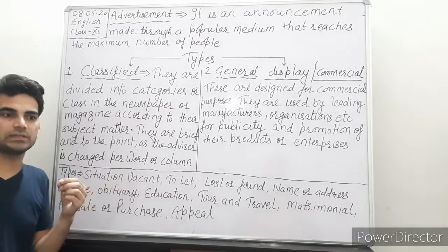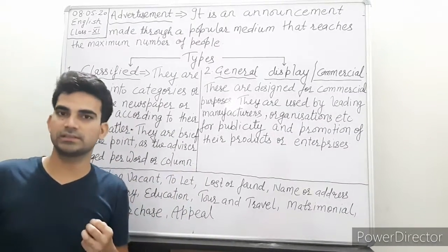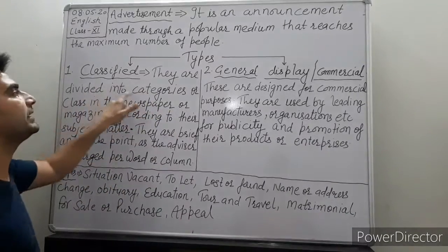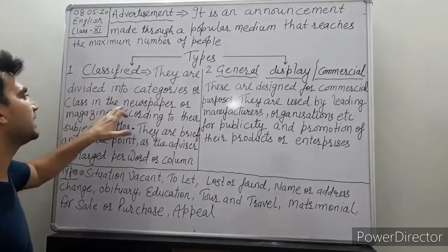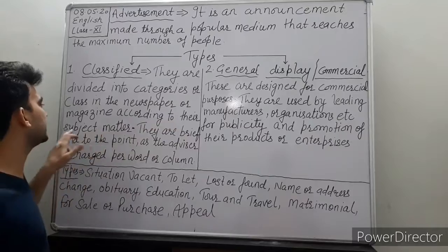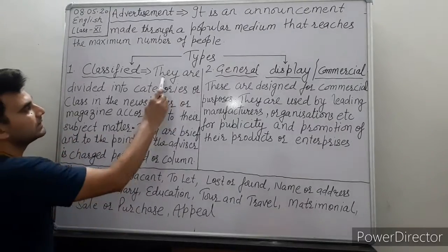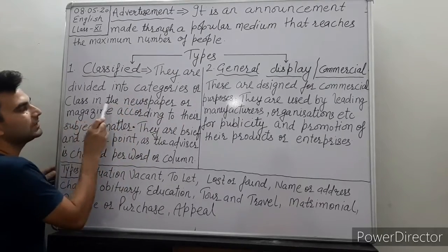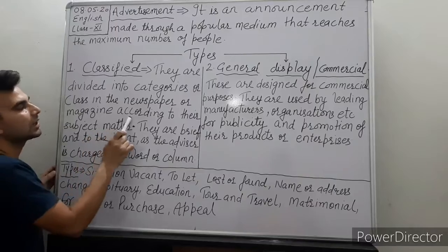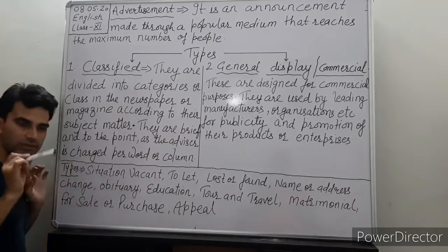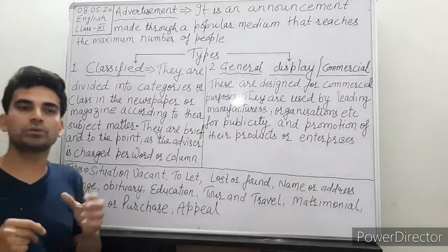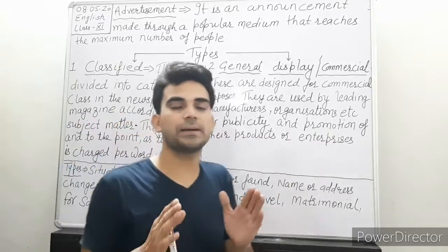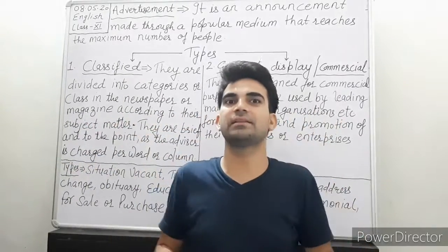Classified — let's come to its definition. Classified advertisements are divided into categories or classes in the newspaper or magazine according to their subject matter. If you read the subject matter, you can see a special piece of advertisement grouped by class or category.